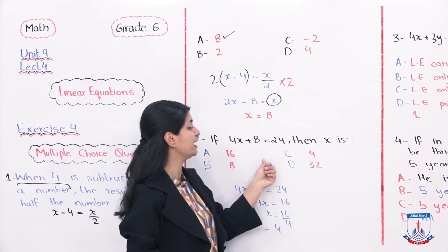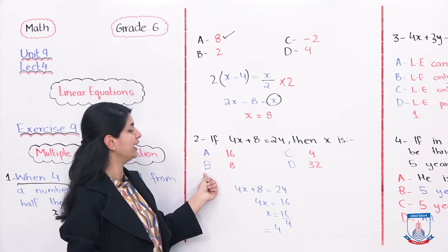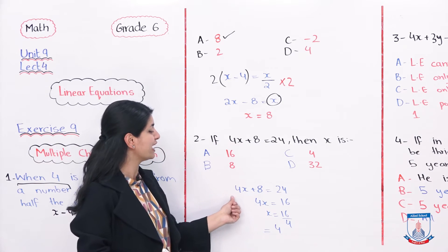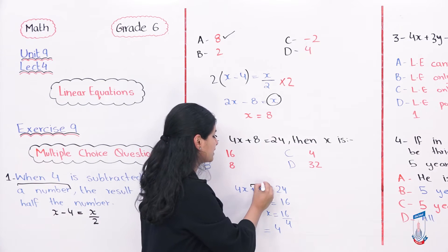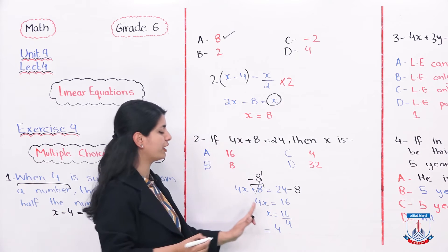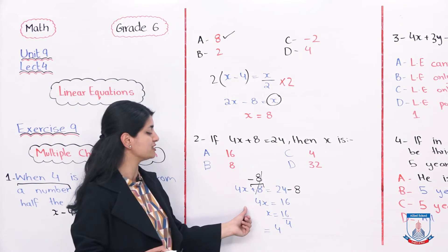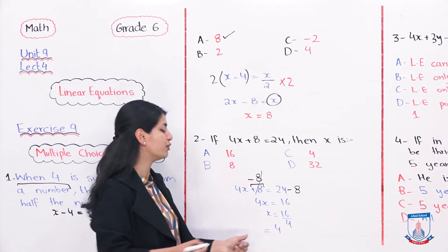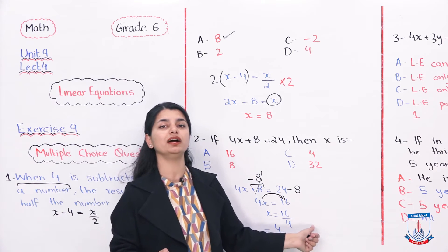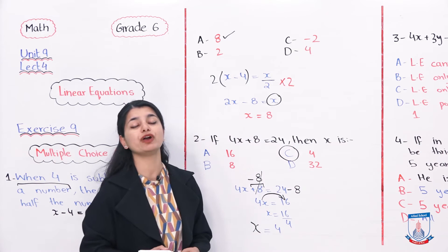Now let's see multiple choice question number 2: if 4x plus 8 equals 24, then x is? We subtract 8 from both sides — 4x equals 16. Dividing both sides by 4, x equals 4. So Option C is correct for MCQ number 2.